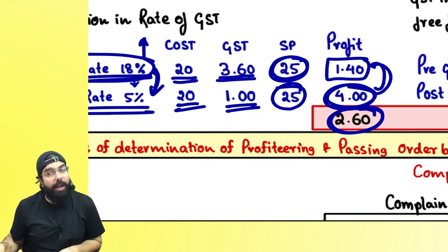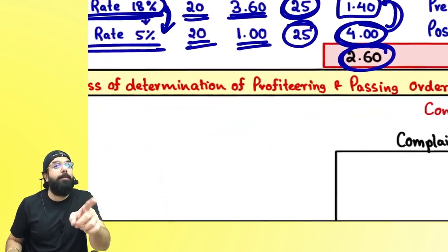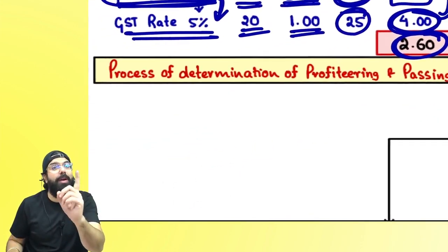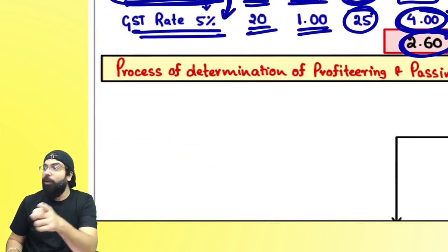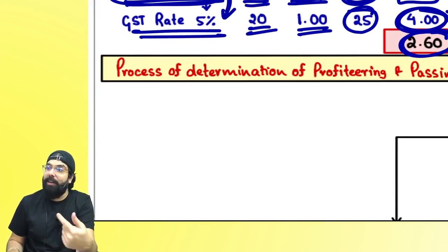If you are doing profiteering, you can be complained to the National Anti-Profiteering Authority. They will catch hold of him, cancel his registration, and impose penalty.